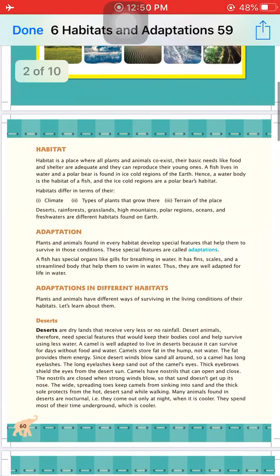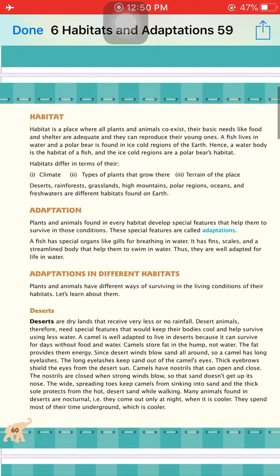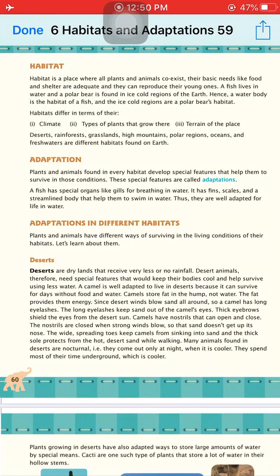A habitat is a place where all plants and animals co-exist, where their basic needs like food and shelter are adequate and they can reproduce. Habitats are the surroundings where organisms live to complete their basic needs like food, shelter, and reproduction. For example, a fish lives in water and a polar bear is found in ice-cold regions. The water body is the habitat of a fish and the ice-cold region is the habitat of a polar bear.